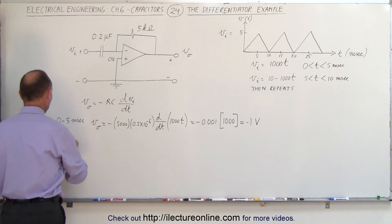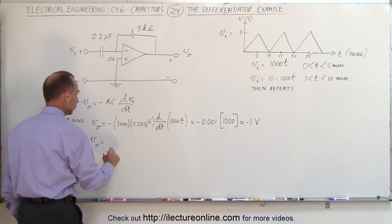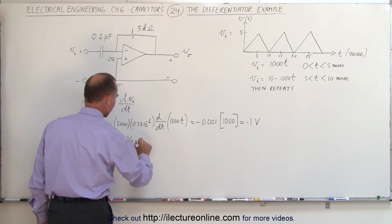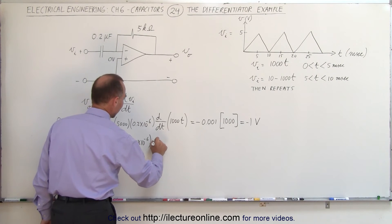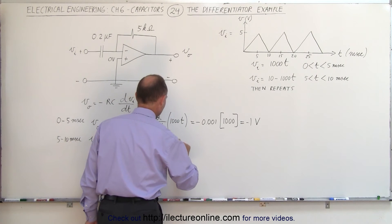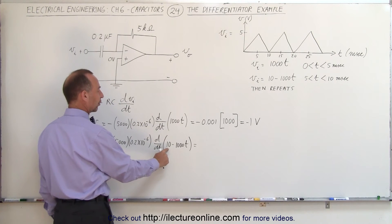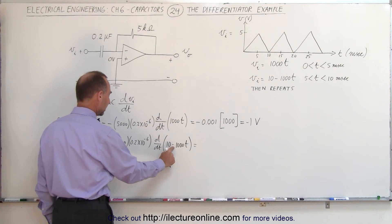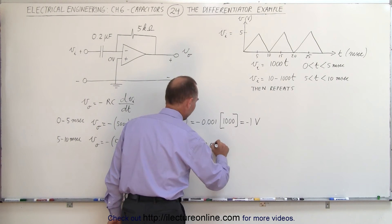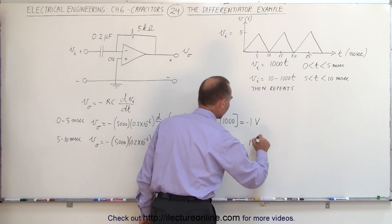Next, from five to ten milliseconds, the output voltage equals minus R times C times the rate of change of the function, which is now 10 minus one thousand t. The derivative of 10 is zero, and we pick up another negative sign which negates the first, so we end up with negative 0.001 times negative one thousand, which is positive one volt.